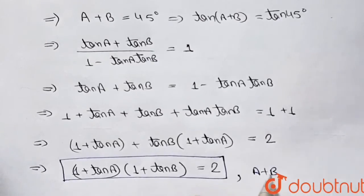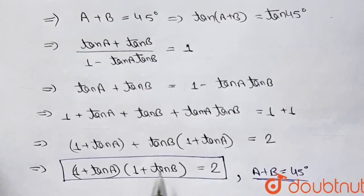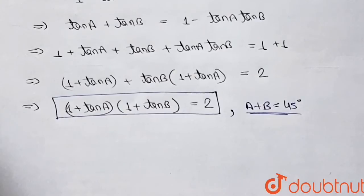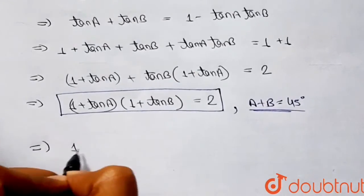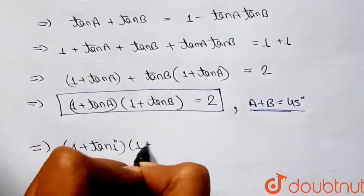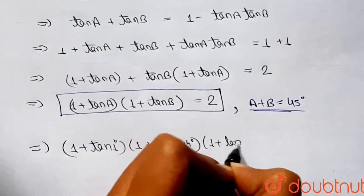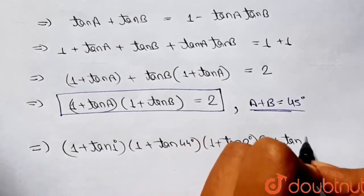If the sum of two angles is 45°, then (1 + tan a)(1 + tan b) = 2. Now let me write down the LHS of the given question: (1 + tan 1°)(1 + tan 44°) × (1 + tan 2°)(1 + tan 43°), and so on.